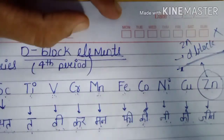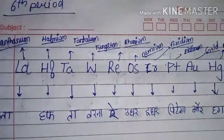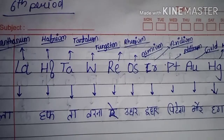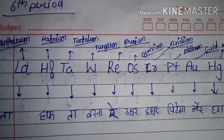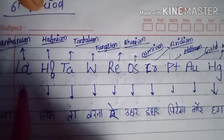Let's now begin. Friends, I have written the sixth period elements that come under d-block elements. Let me show you all the elements and tell you their names.